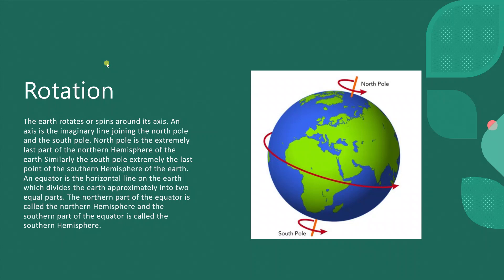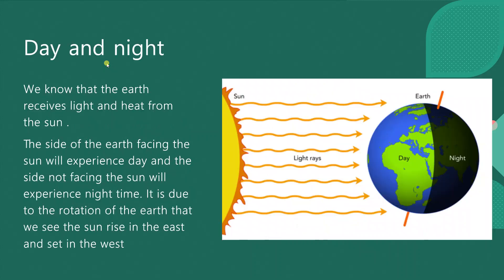An equator is the horizontal line on the earth which divides the earth approximately into two equal parts. The northern part of the equator is called the northern hemisphere. The southern part of the equator is called the southern hemisphere.